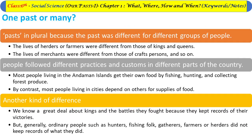The sixth topic is one past or many. We say 'pasts' in plural because the past was different for different groups of people. The lives of farmers are different from those of kings and queens; the lives of merchants are different from those of craftspersons, and so on. People follow different practices and customs in different parts of the country. People living in the Andaman Islands get food by fishing, hunting, and collecting forest produce, while most people in cities depend on others for food supply. We also know a great deal about kings and the battles they fought because they kept records of their victories, but ordinary people such as hunters, gatherers, farmers, or herders generally did not keep records.